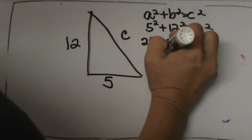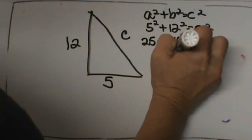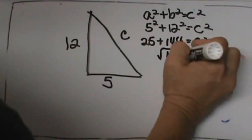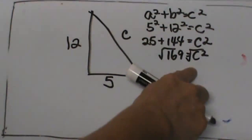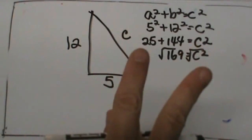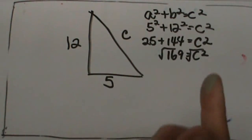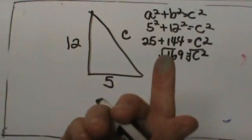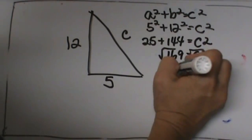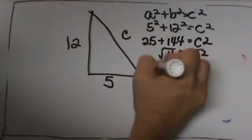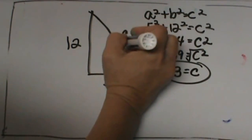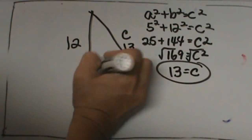These add together to 169 equals C squared, so we are going to take the square root of both sides. Remember, when you take the square root you actually get two answers: a positive and a negative. But we know that a length can't be negative, so we are only going to look at the positive. So C is 13, meaning this hypotenuse is 13.